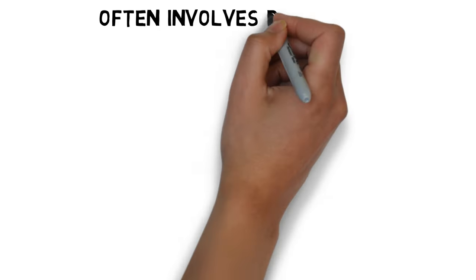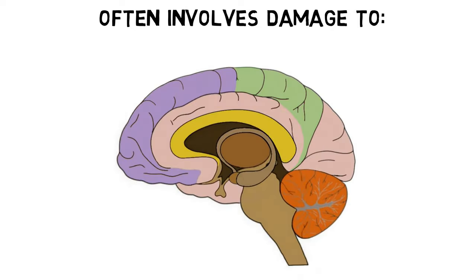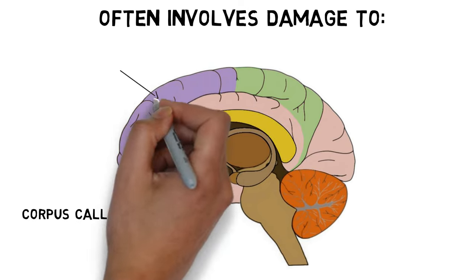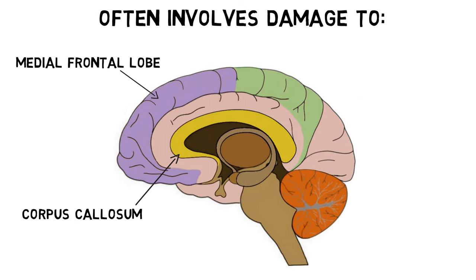Although there are a number of areas of the brain that may be damaged in alien hand syndrome, some of the most common variants of the syndrome involve damage to the corpus callosum, medial frontal lobe, and/or parietal lobe. It is still not fully understood how damage to these areas leads to alien hand syndrome, but researchers have proposed a number of hypotheses.